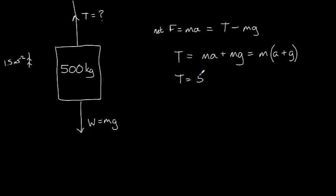And we know that m is 500 kilograms. We know that a is 1.5 meters per second squared. And we know that g is 9.81 meters per second squared. So this gives us a final value for T of 5,655 newtons. That is the tension in the rope.